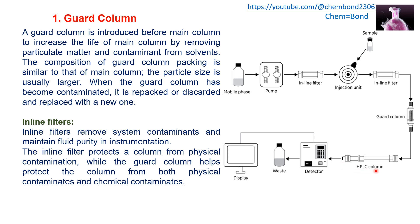To increase the lifetime of the main HPLC column, a guard column is introduced before it to intercept any particulate material coming from the mobile phase, thereby protecting the main column. A guard column removes particulate matter and contaminants from solvents. The packing material composition of the guard column is similar to that of the main column, but the particle size in the guard column is larger. When the guard column becomes contaminated, it is repacked or discarded and replaced with a new one.